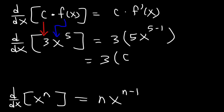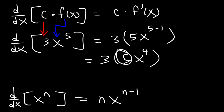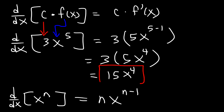5 minus 1 is 4. And now we can multiply the 5 by the 3. 3 times 5 is 15. So this will give us 15x to the fourth power. And that's the answer.